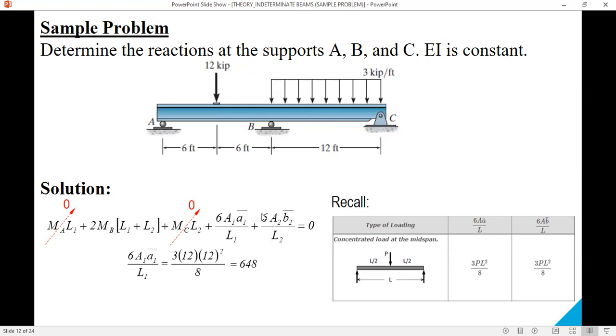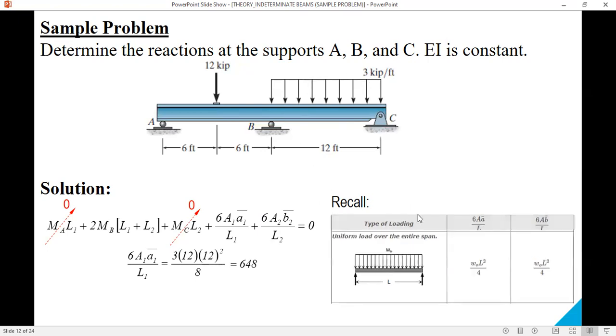For the right span, 6A2 B2 bar over L2, for a uniform load over the entire span, the value of 6AB over L is WL cubed over 4, equal to 1296. So we are going to substitute these values into the equation and we can solve for MB.